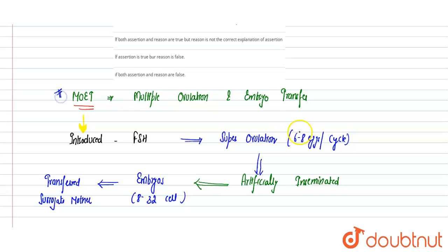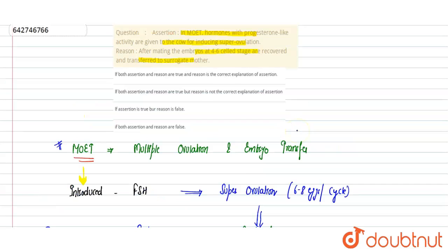It is a widely used technique in case of animal breeding, specifically cattle breeding. So our assertion is: In MOET, hormones with progesterone-like activity are given to the cow. This is incorrect because hormones like FSH activity, follicle stimulating activity, lead to super ovulation. So assertion is wrong.